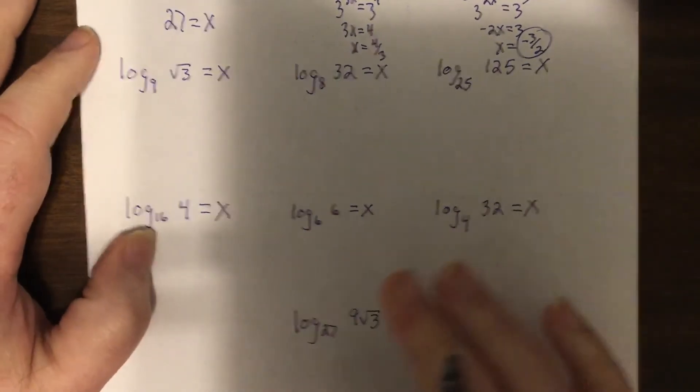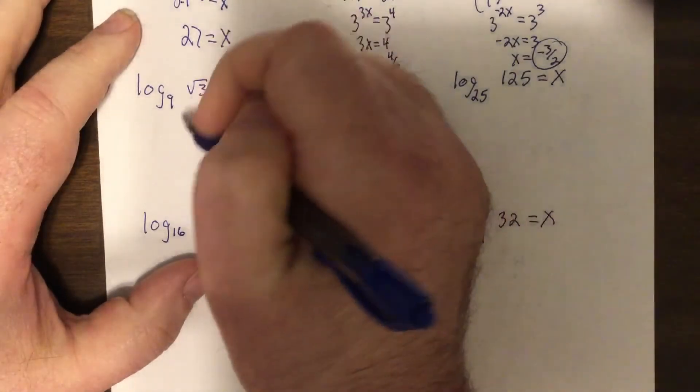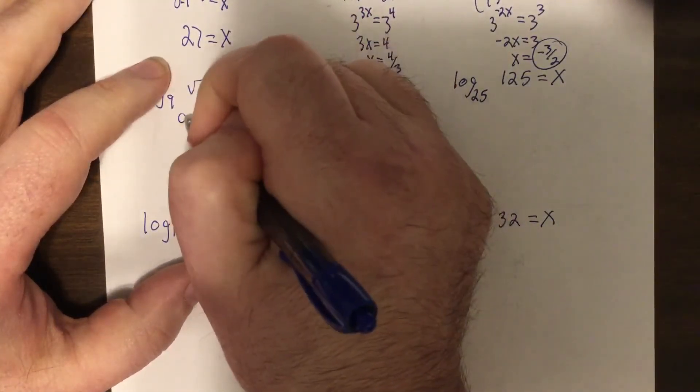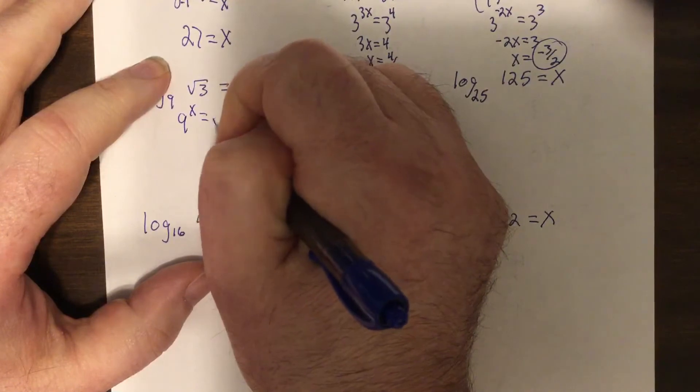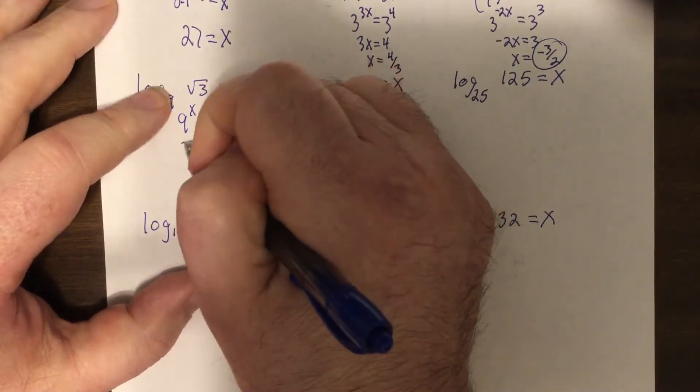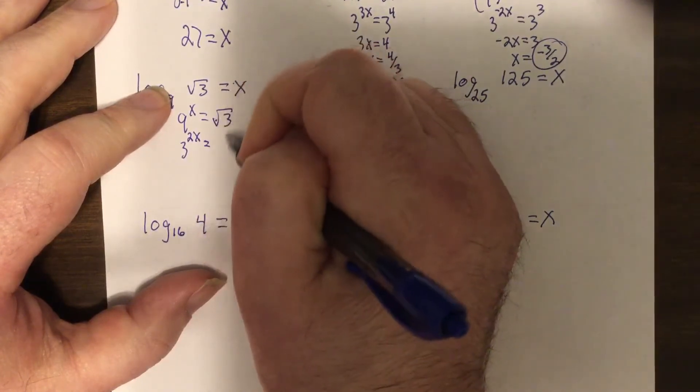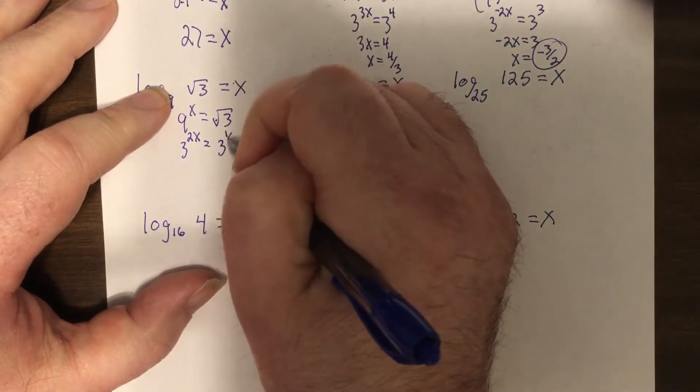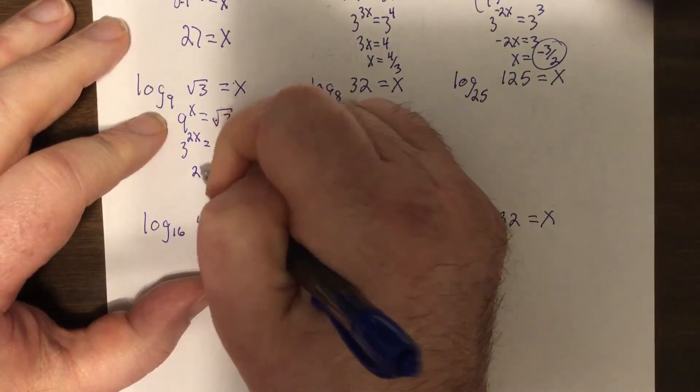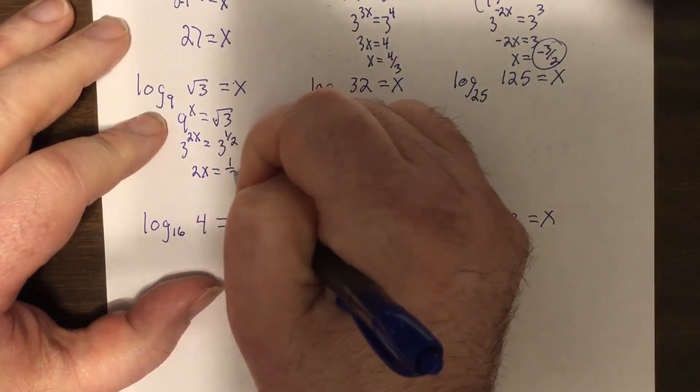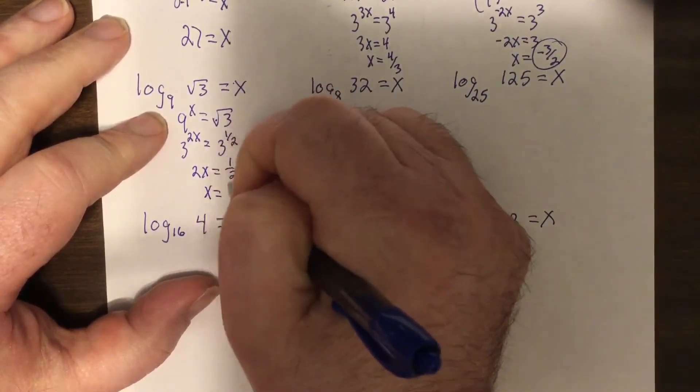So this nine to the x equals square root of three. So this would be three to the two x. Now remember, radical goes in the bottom, so be three to the half, so two x equals one half, so x equals one fourth.